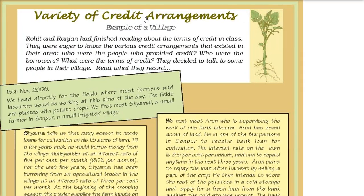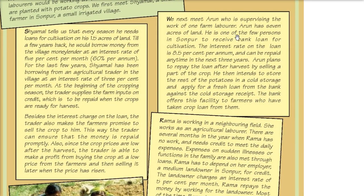Arun is supervising the work of one farm laborer and has seven acres of land. He is one of the few persons in Sonpur village receiving a bank loan for cultivation at 8.5% per annum, repayable over three years. Arun plans to repay after harvest by selling part of the crop. He also grows potatoes and wants to store them in cold storage, for which the bank is also providing a loan against a cold storage receipt.